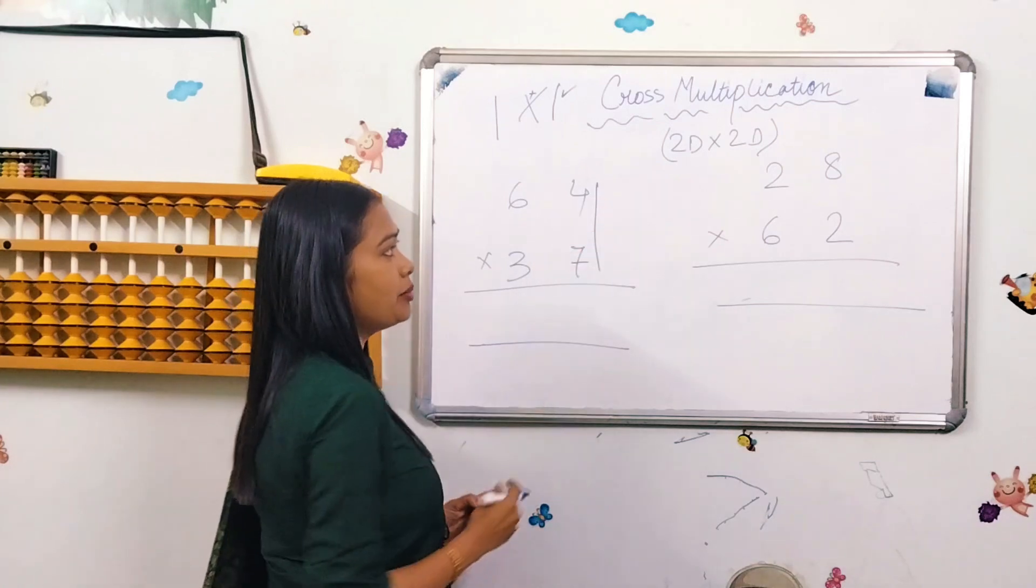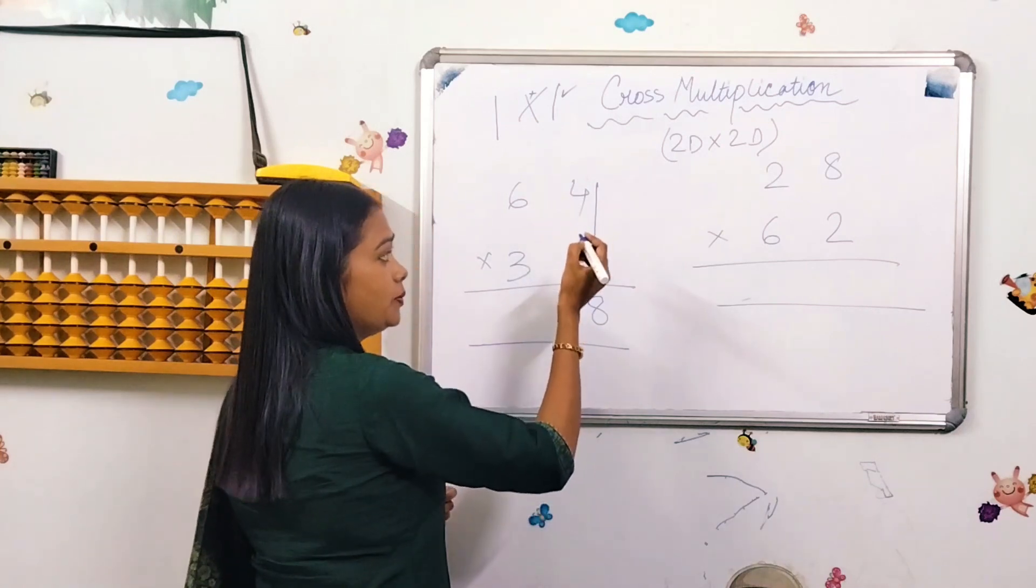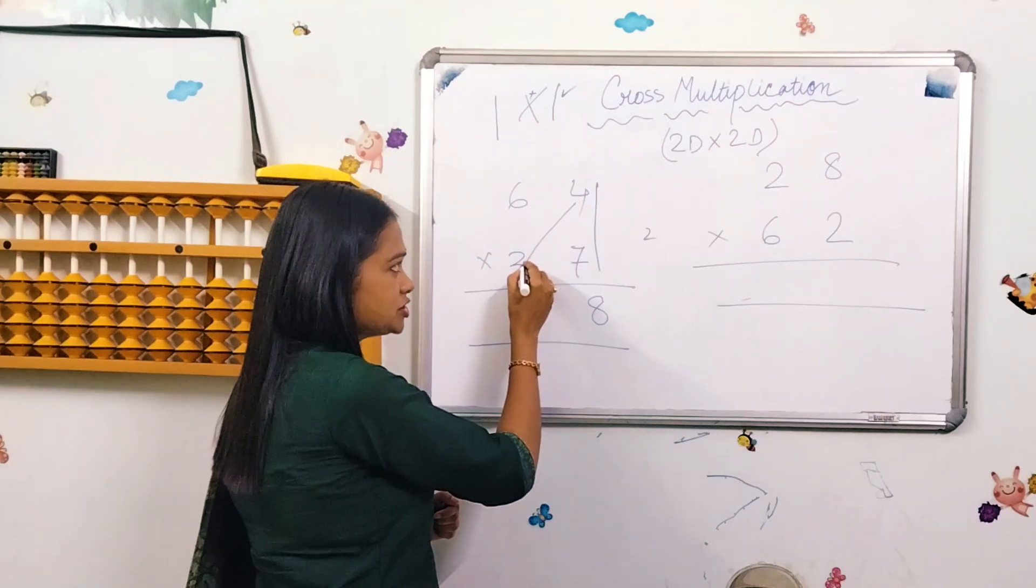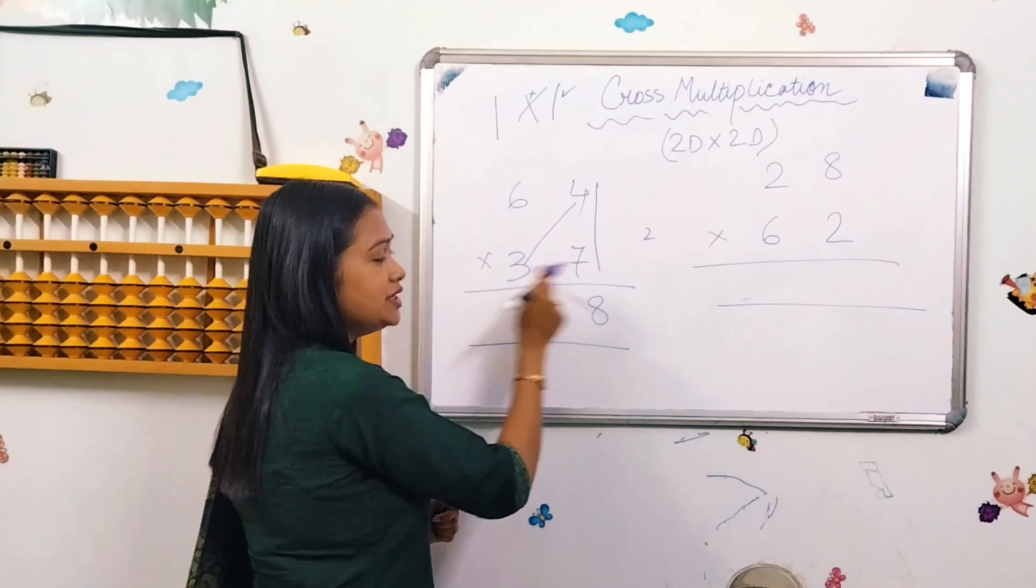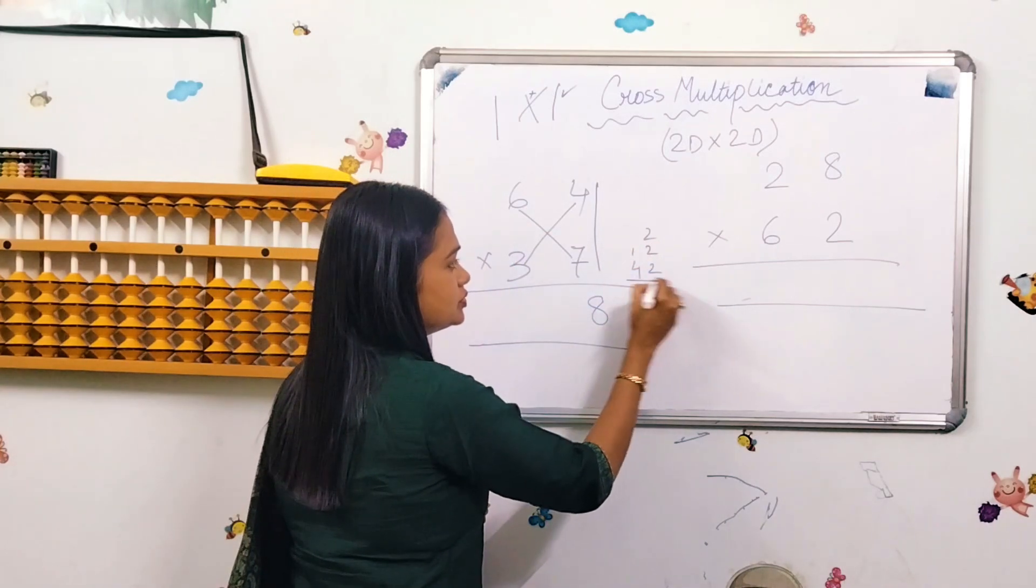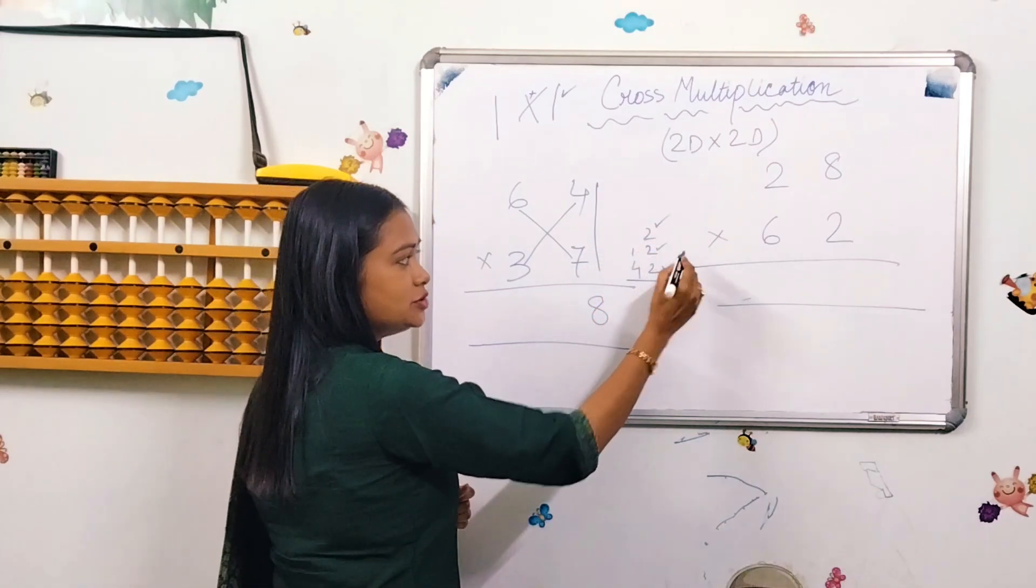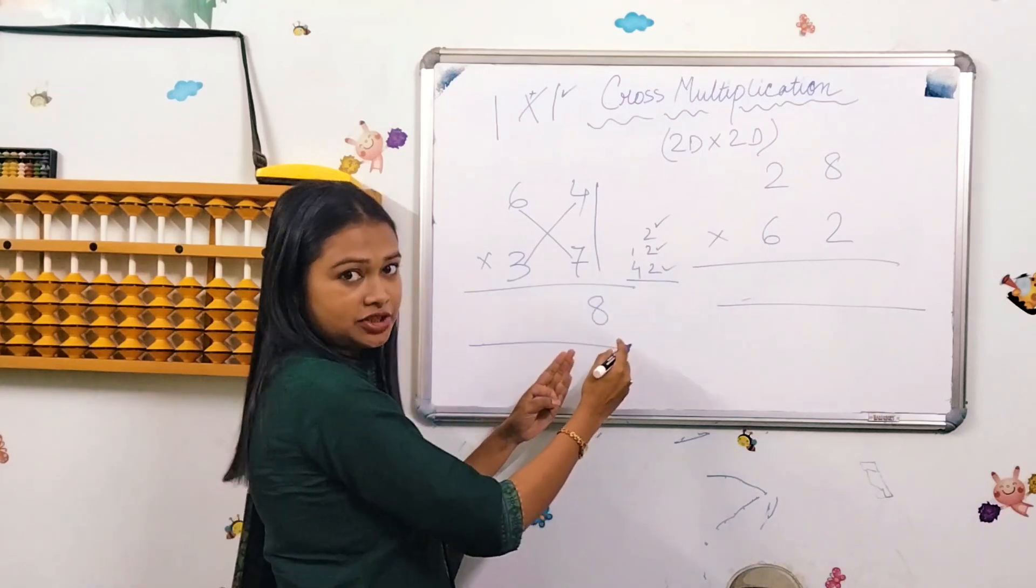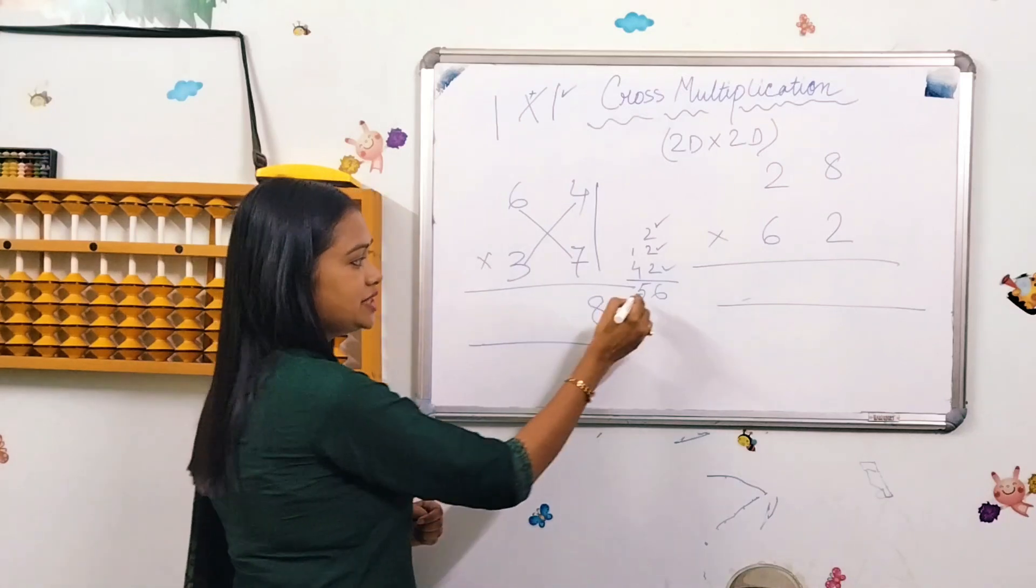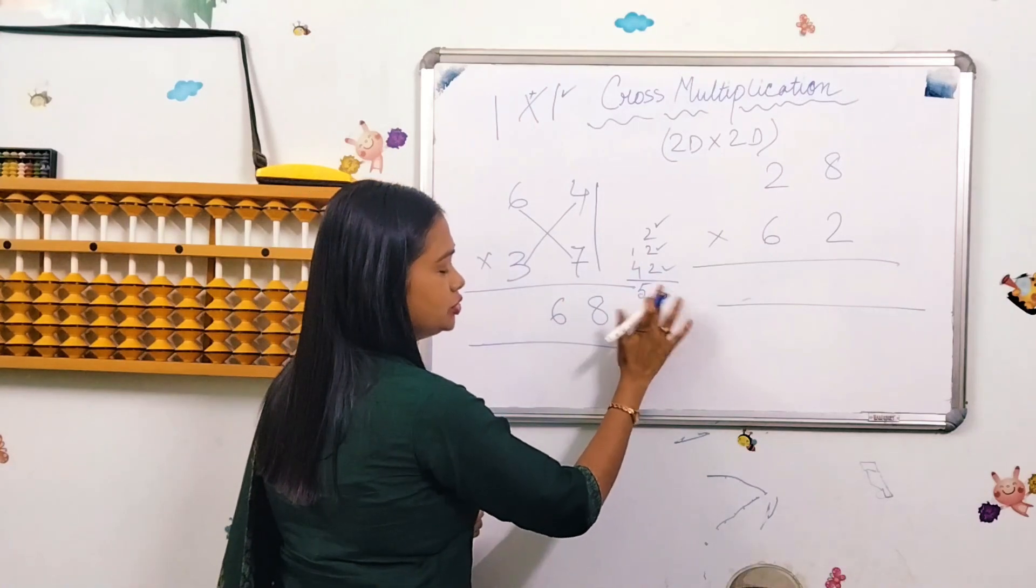So, we know 7 into 4, that is 28. I wrote 8, carry 2. Now the cross multiplication: 4 into 3 is 12, and 6 into 7 is 42. The cross multiplication gives us addition, which is 12 plus 42, giving us 54. So 4 plus carry 2 is 6, and carry 5.